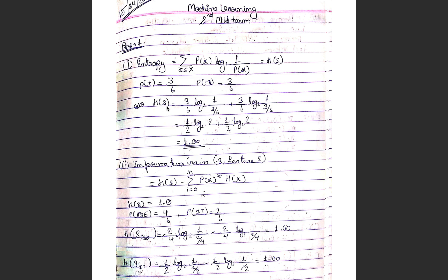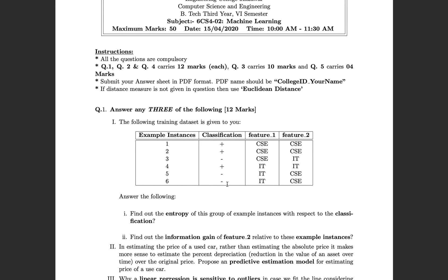We denote entropy as H(S). H(S) is equal to the summation over the two classes — plus and minus. For the first level: three by six times log base 2 of one over three by six, and similarly for minus: three by six times log base 2 of one over three by six. Log base 2 of two equals one, so 0.5 times one is 0.5 and 0.5 times one is 0.5. The total entropy is one.